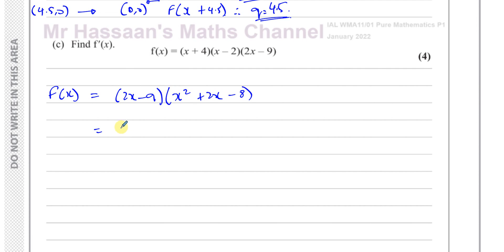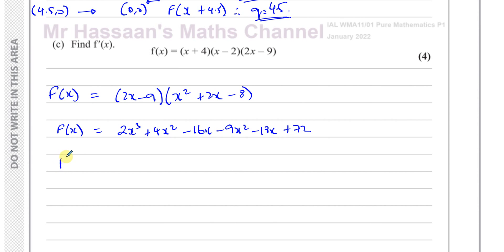Expanding (2x-9)(x²+2x-8): 2x times x² is 2x³, plus 4x² minus 16x, then minus 9x² minus 18x plus 72. So f(x) equals 2x³ plus (4x²-9x²) plus (-16x-18x) plus 72, which simplifies to 2x³ minus 5x² minus 34x plus 72.